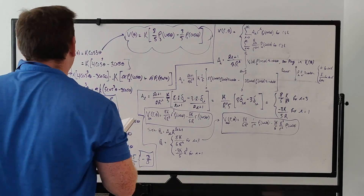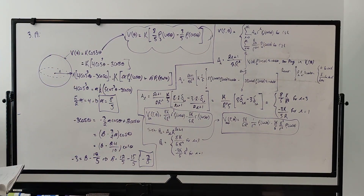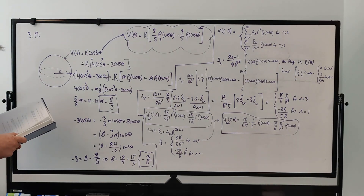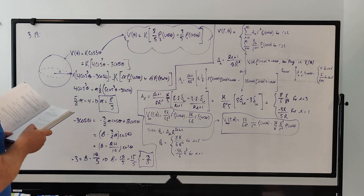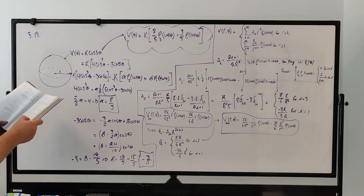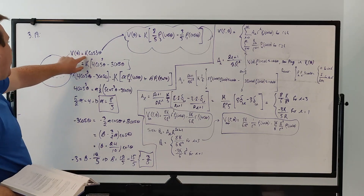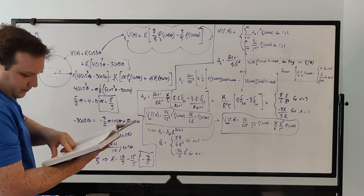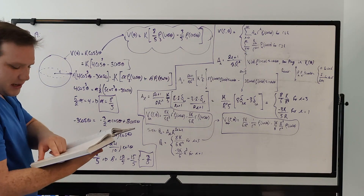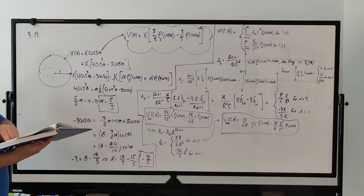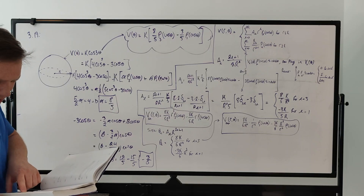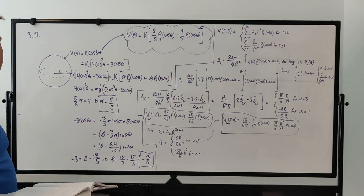Hello everyone, welcome to problem 3.19 in Griffiths' Electrodynamics. Our problem statement is that the potential at the surface of a sphere of radius R is given by k times cosine of 3 theta, where k is a constant. We want to find the potential inside and outside the sphere, as well as the surface charge density sigma as a function of theta on the sphere, and assume there's no charge inside or outside the sphere.